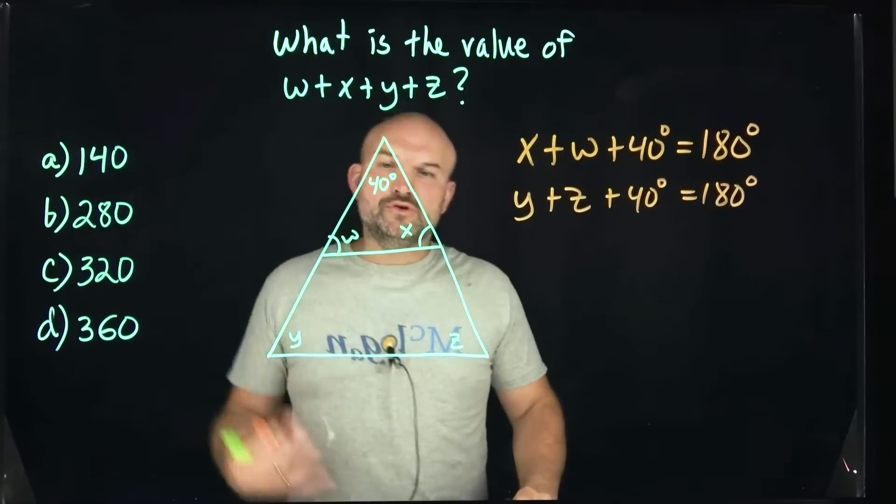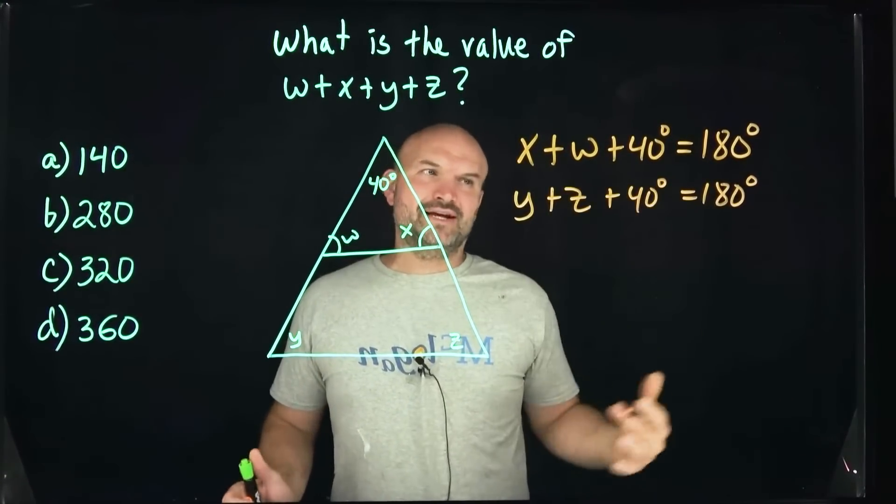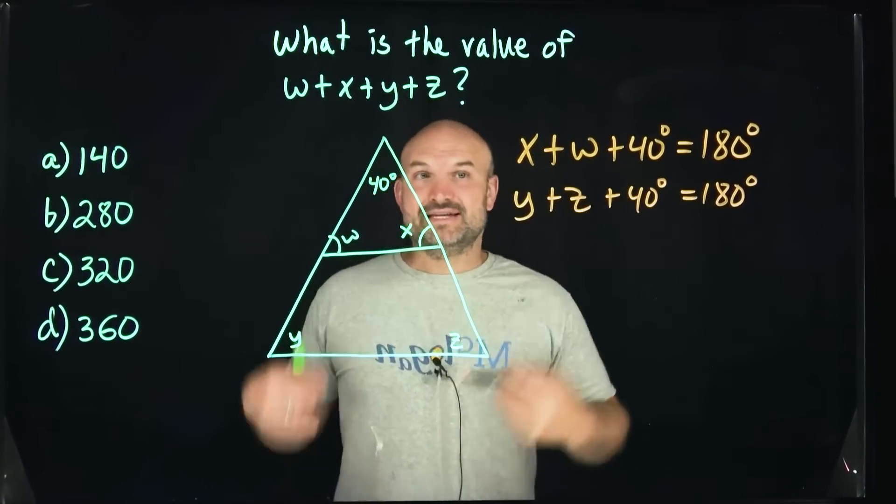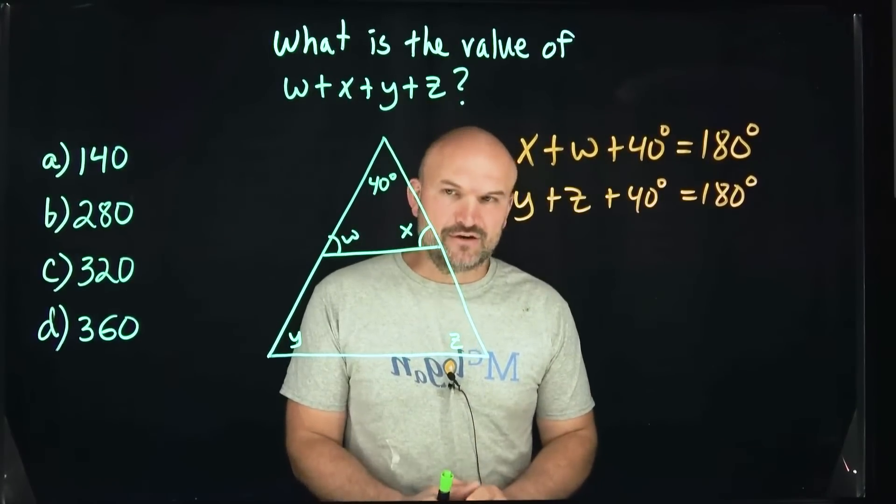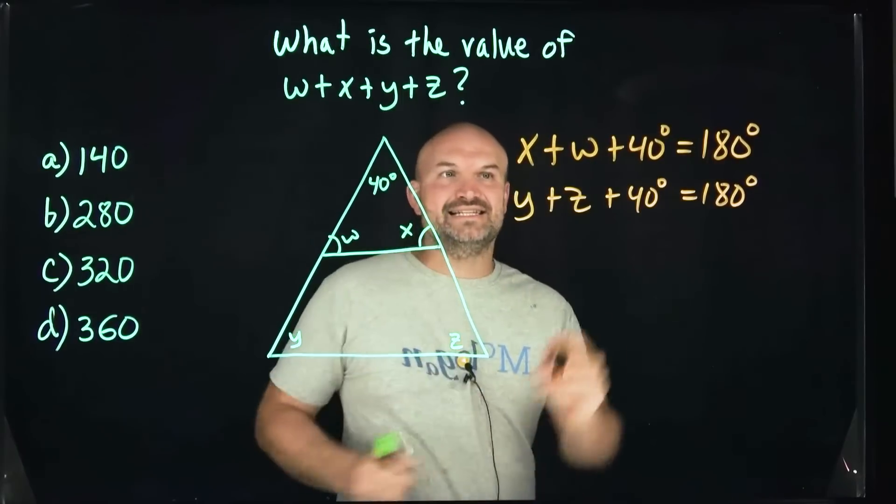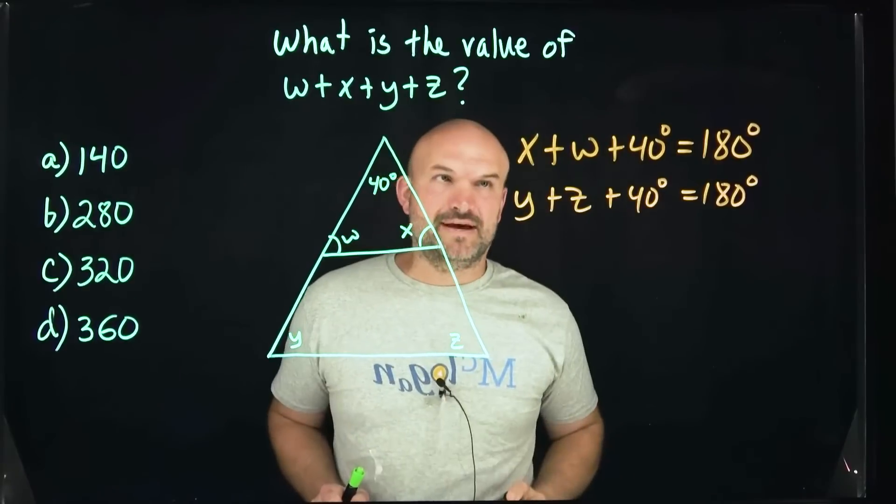Now the confusing thing that we're looking at is you look at these two equations, you're like, well, how can I solve these two equations when I have four missing variables? Typically the number of variables we have, that's how many equations we need to solve. But there's one thing that's important because it's not asking what exactly is the value of w, x, y, and z. It's just asking what is the sum of all of them.